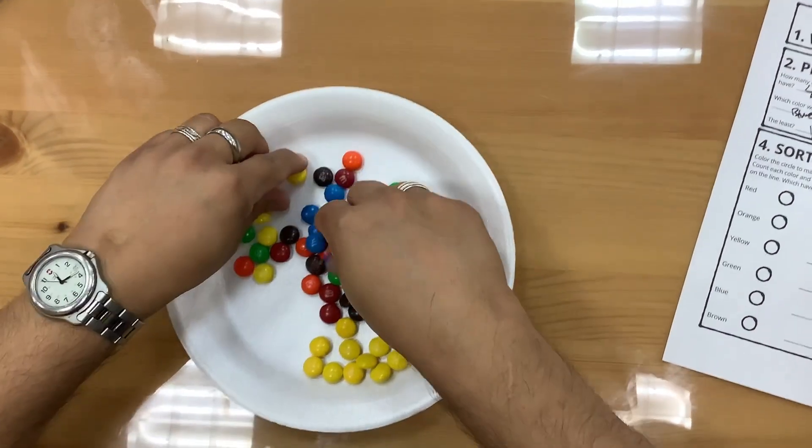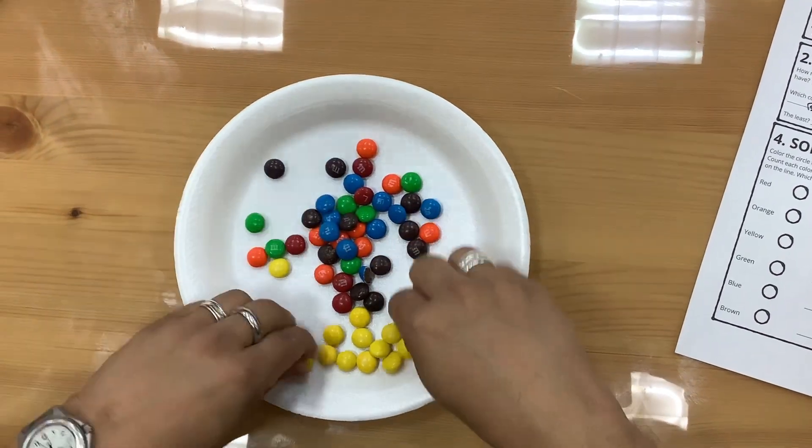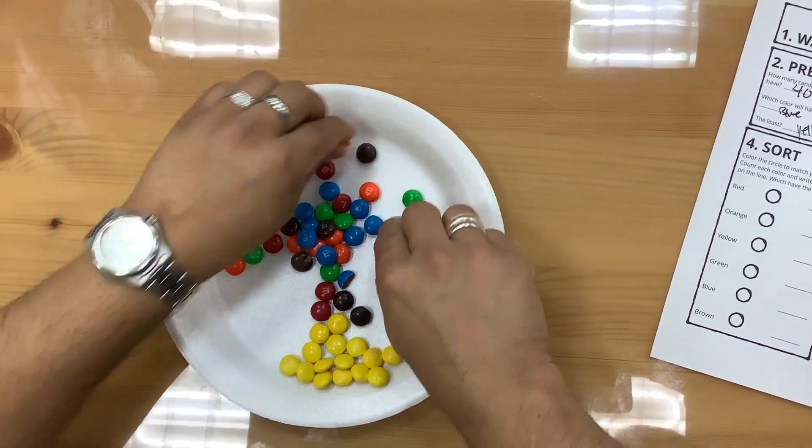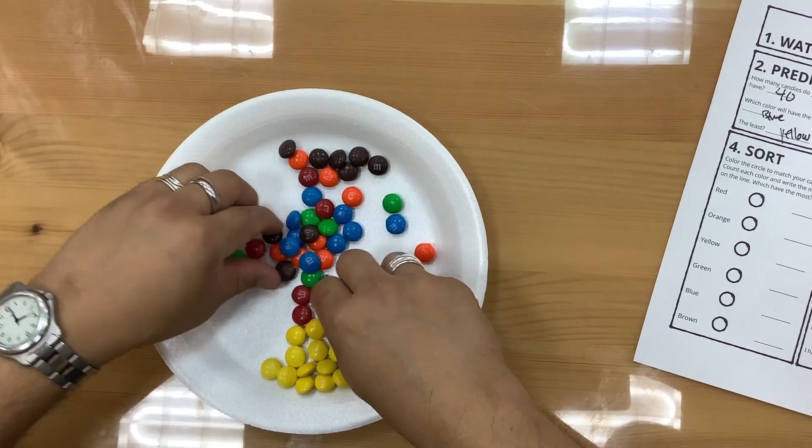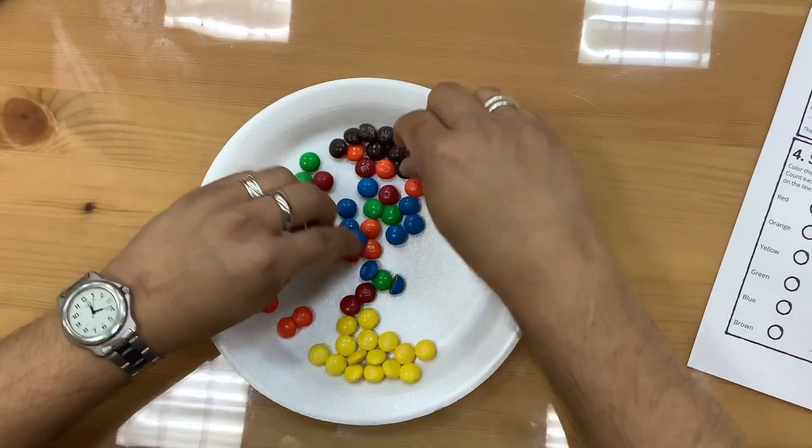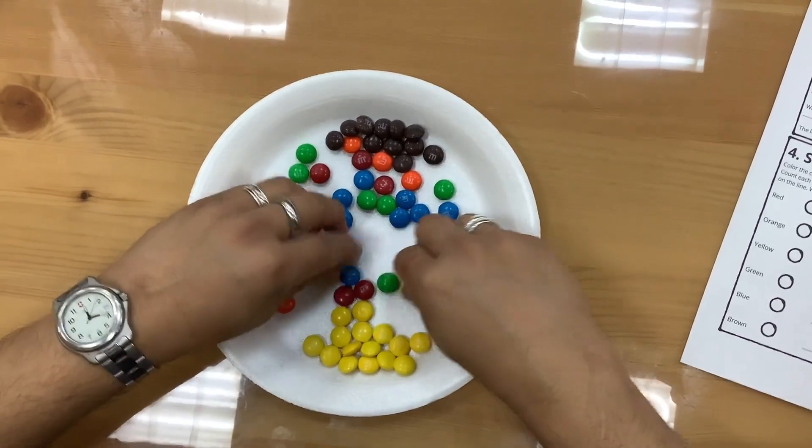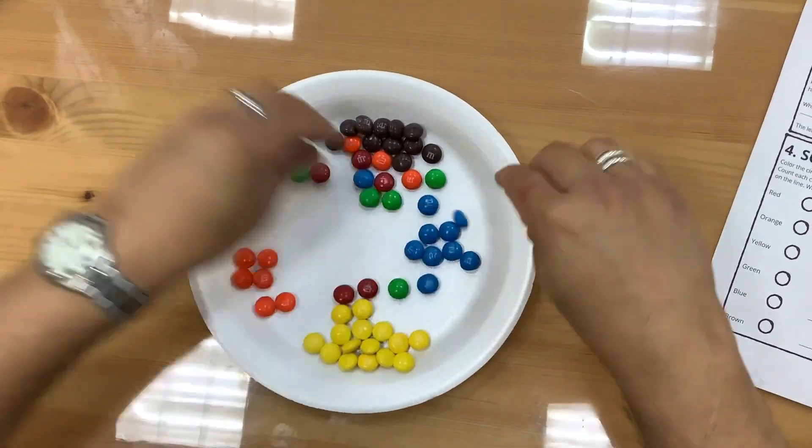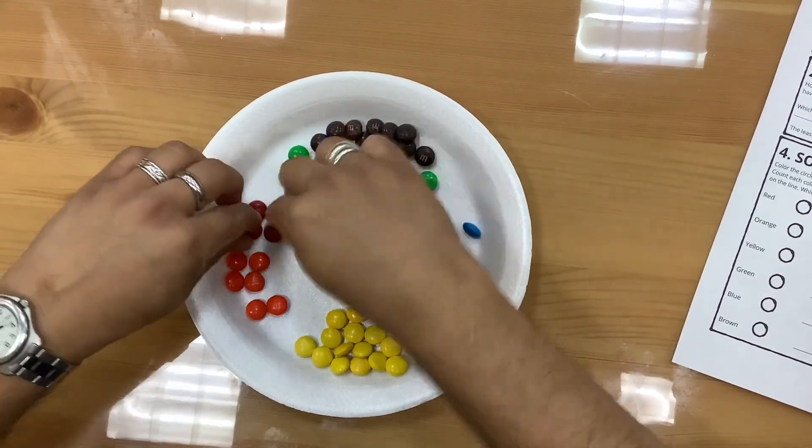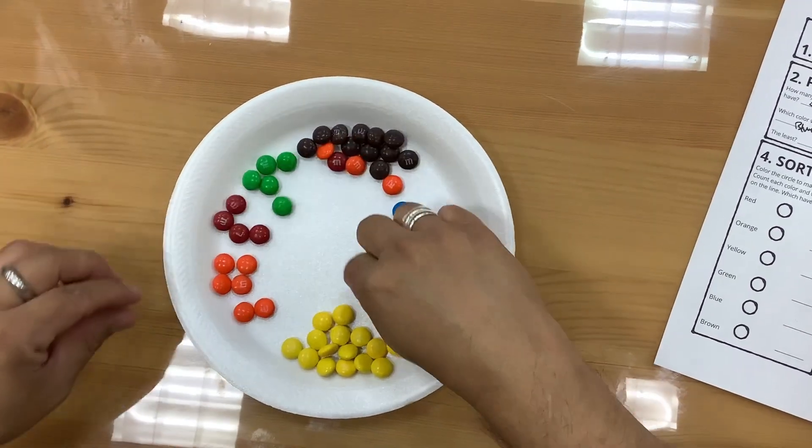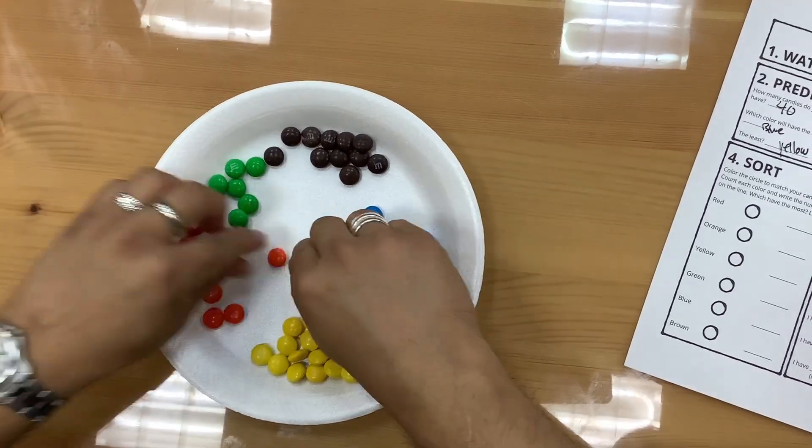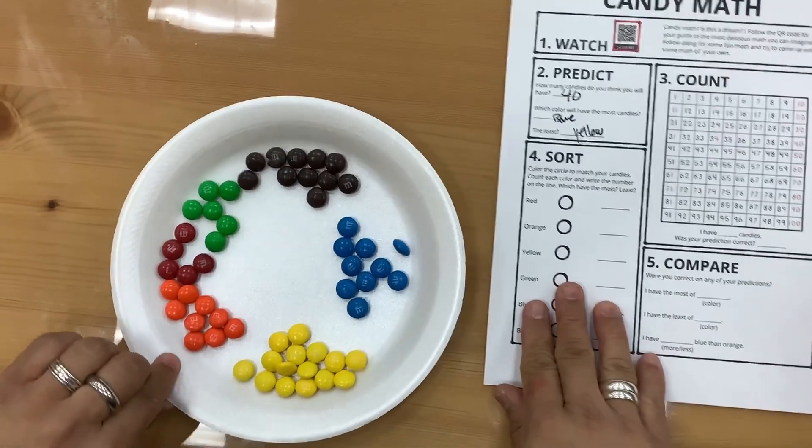There we go. All the yellows go over here. All the browns go over here. All the oranges go over here. All the blues will go here. Looks like somebody ate half of the blue. I'm going to put my greens over here. Red over here. And orange over here. So I'm just going to start counting.